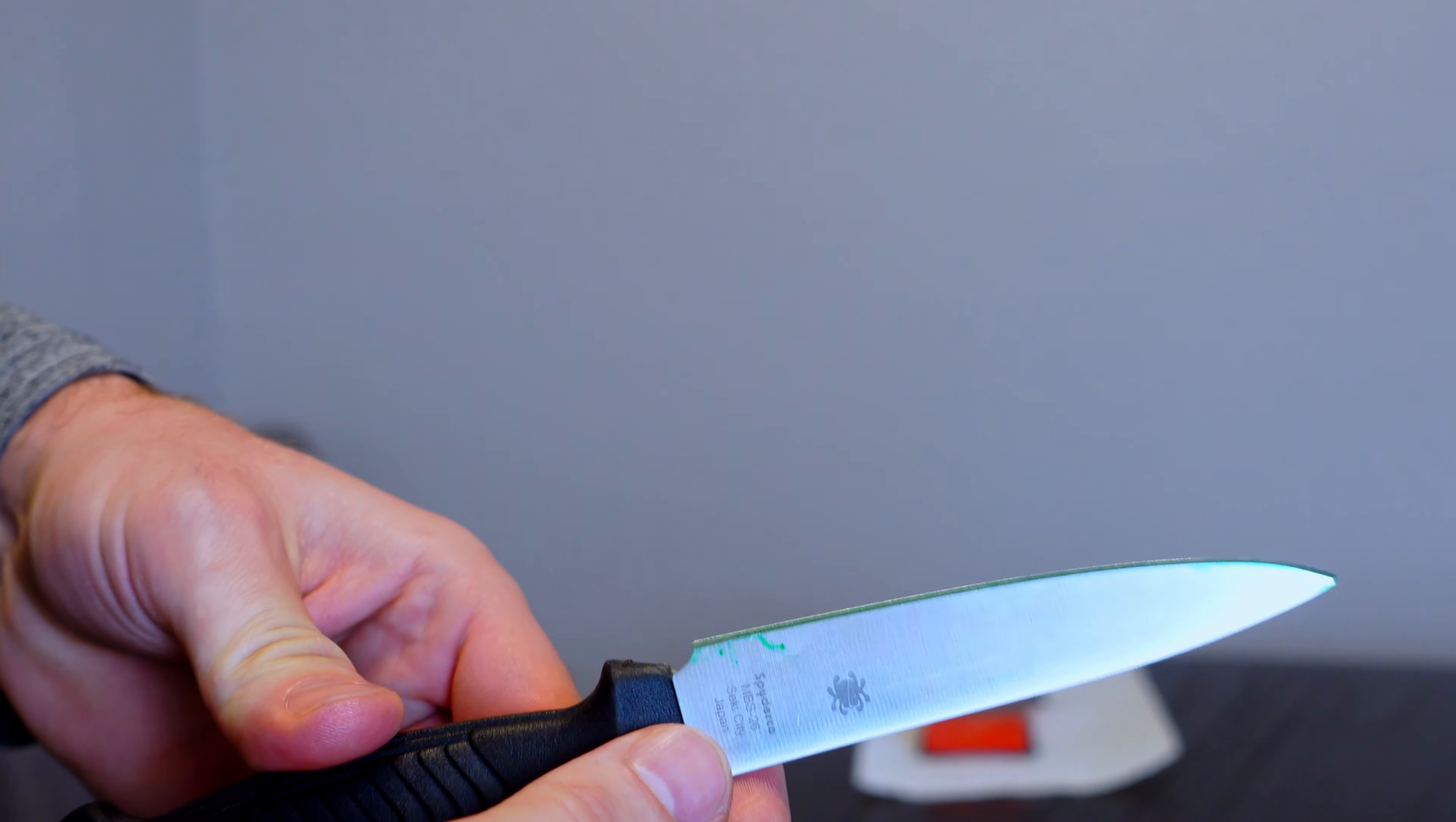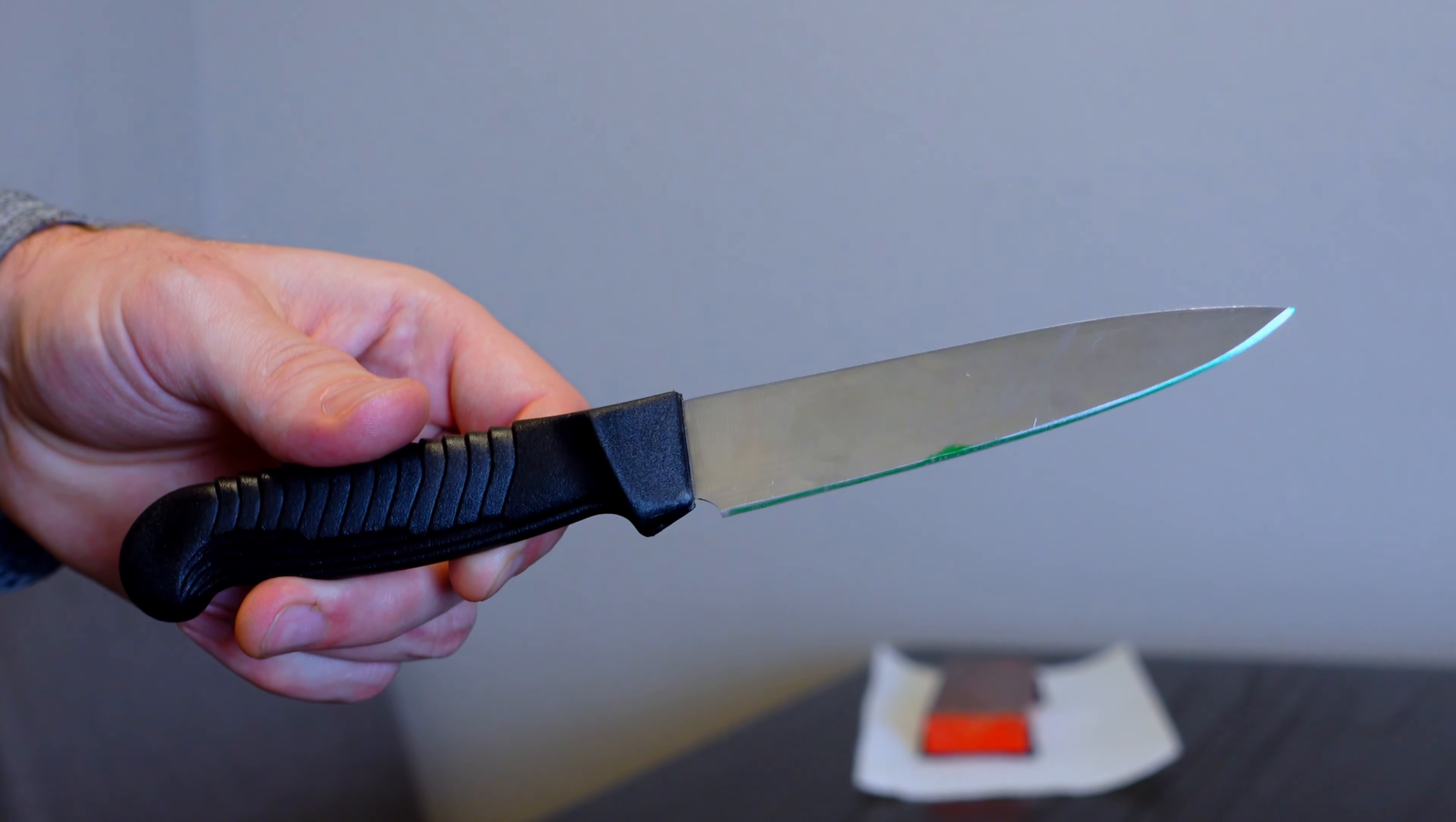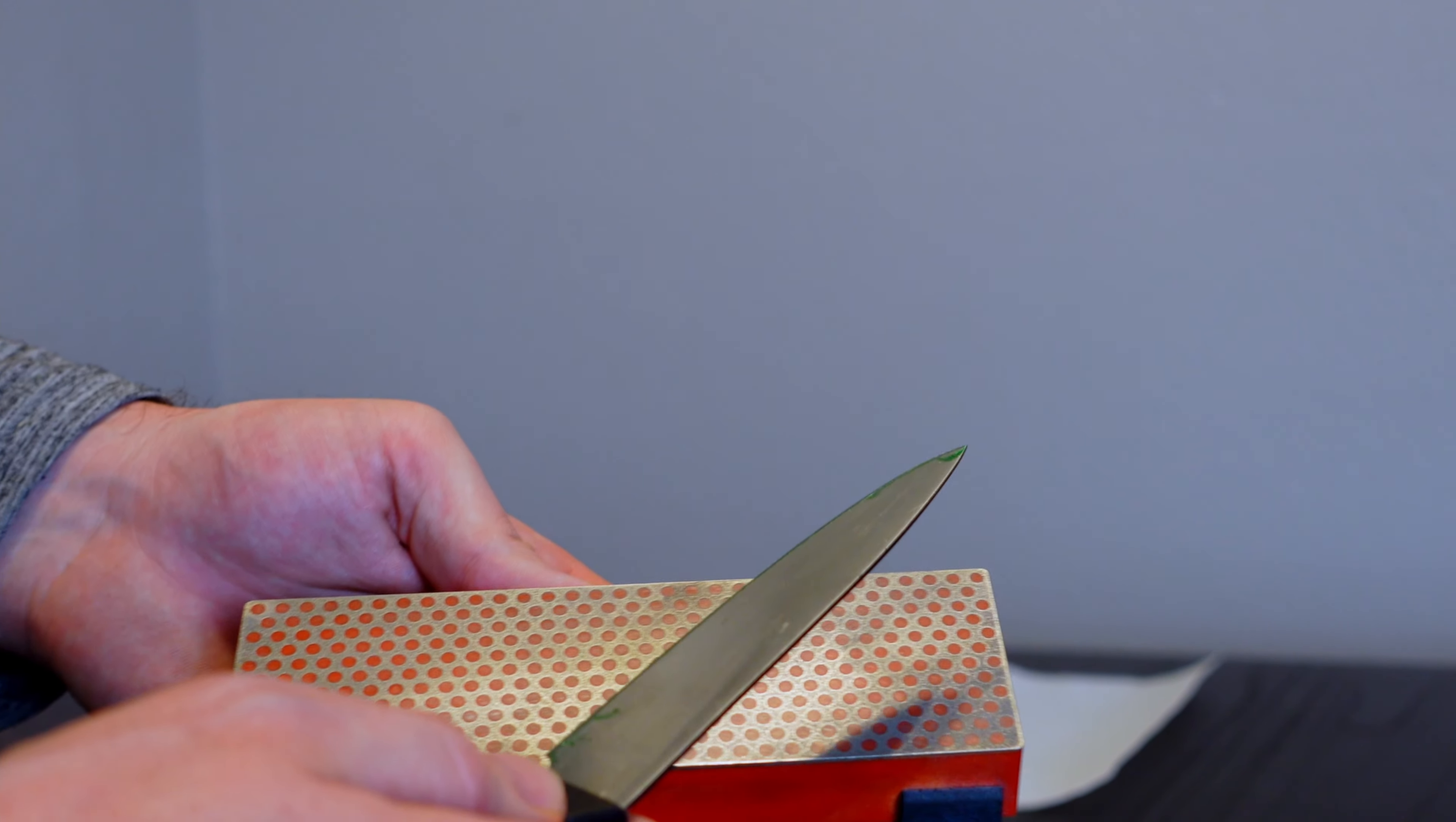So as you can see, at least if my camera focuses, I will have a green line on my knife edge or my secondary bevel. Now what I'm going to do is run the knife across the stone at what I think the angle is and we'll see how I'm actually hitting the angle when I do this.